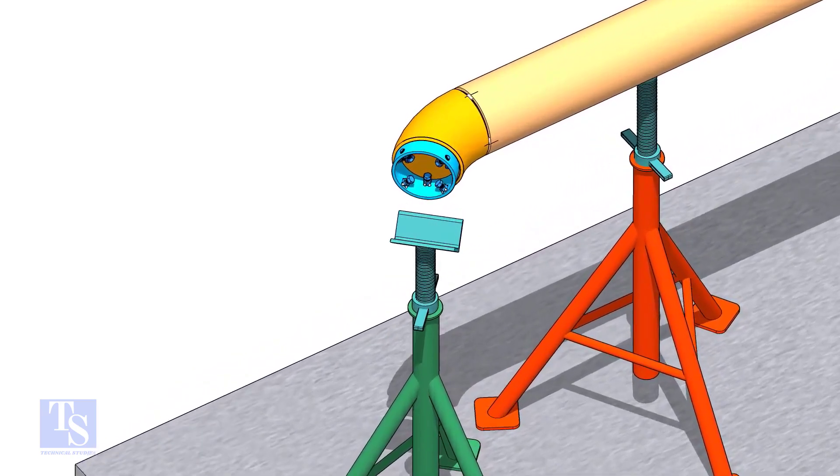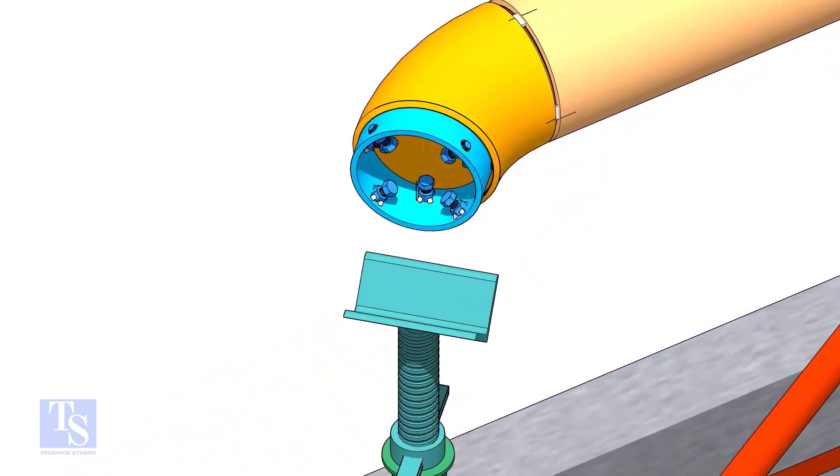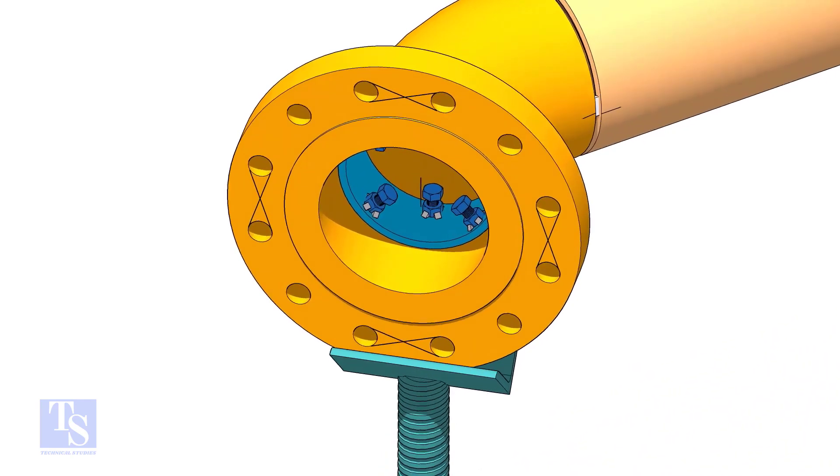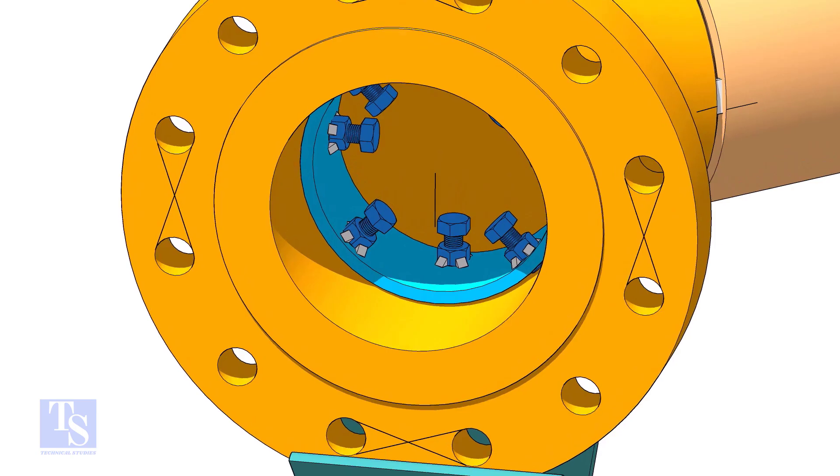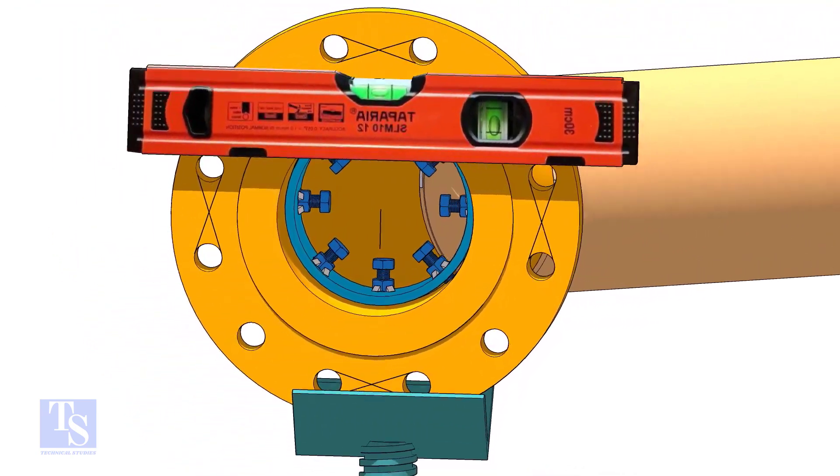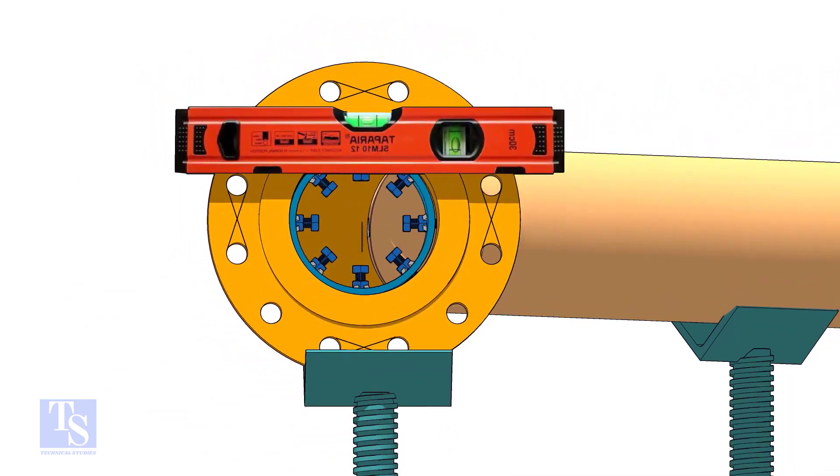Put the clamp in the elbow and tighten lightly. Put the flange in its position and maintain the level. Tighten the clamp bolts lightly.